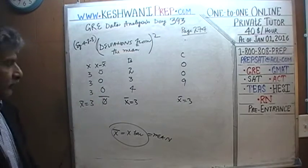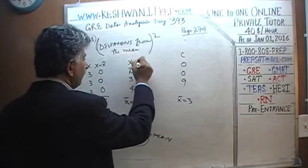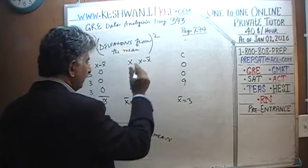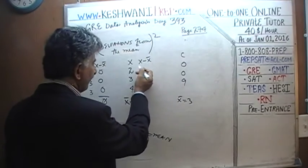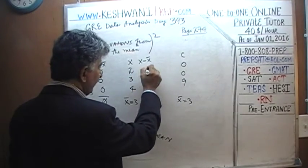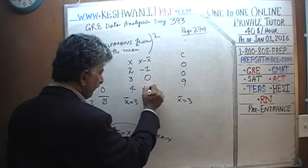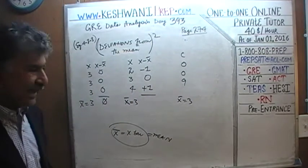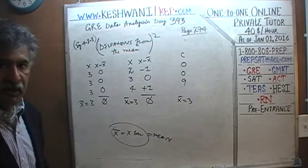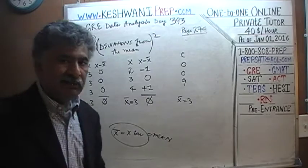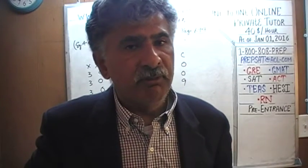In Town B, since the mean is 3: 2 minus 3 is negative 1, 3 minus 3 is 0, and 4 minus 3 is positive 1. If you simply add the deviations from the mean, the positive deviations cancel out the negative deviations, giving a sum of 0 — hence giving the impression that all observations are the same.